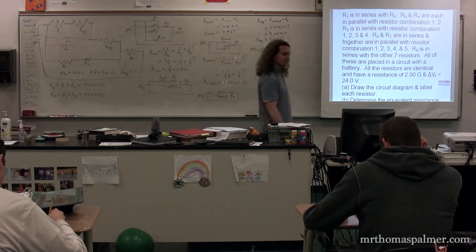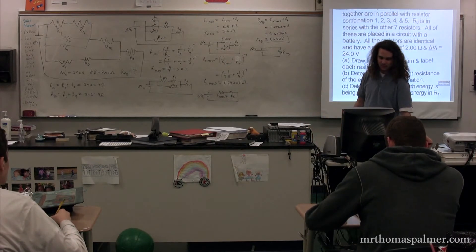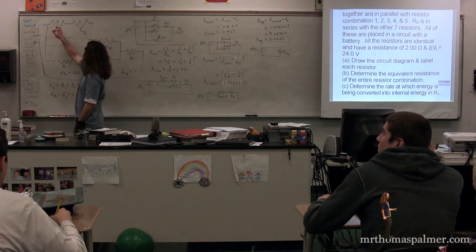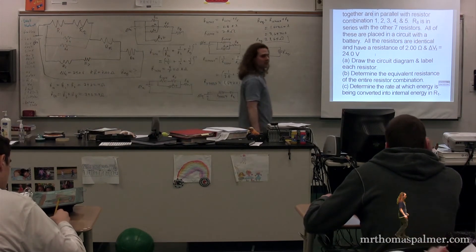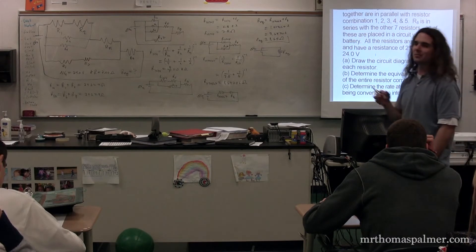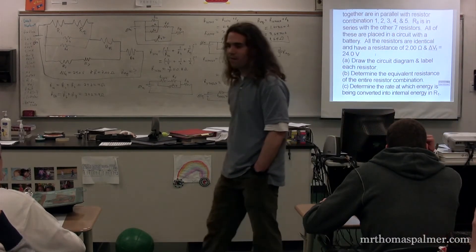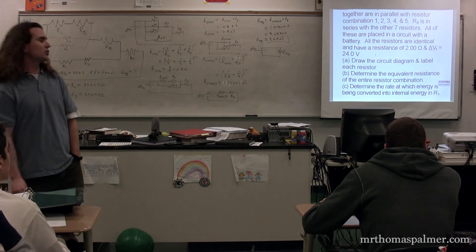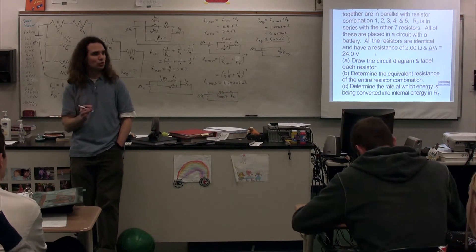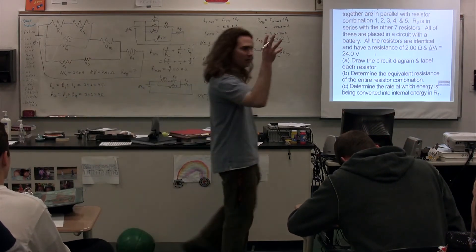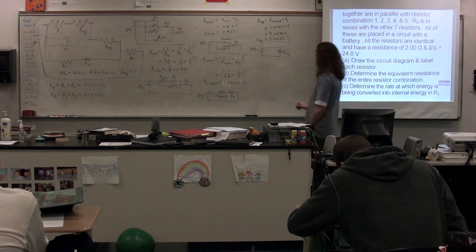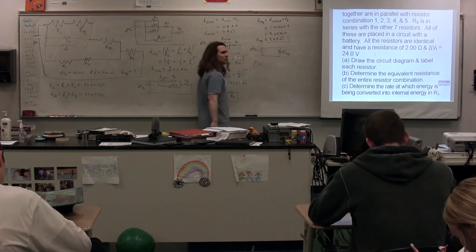Now we have Part C: determine the rate at which energy is being converted into internal energy in resistor one. The rate at which energy is being converted into internal energy — that is power. Watts. Joules per second is the rate — the amount of joules per second being converted to internal energy. So we need all three equations for electric power.